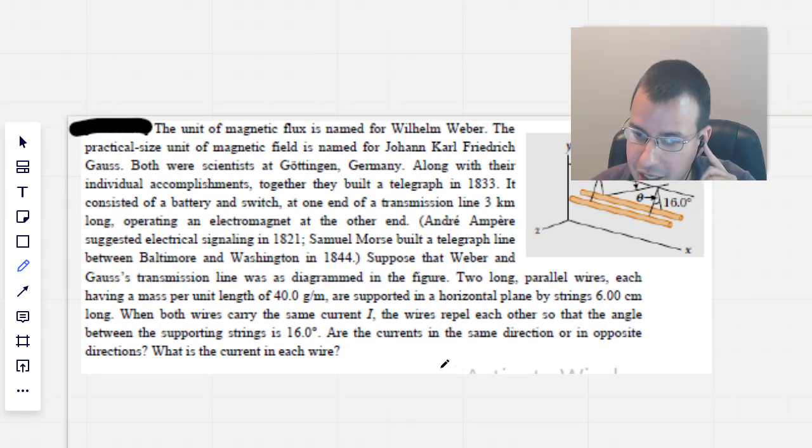When both wires carry the same current I, the wires repel each other so that the angle between the supporting strings is 16 degrees. Are the currents in the same direction or in opposite directions? What is the current of each wire?